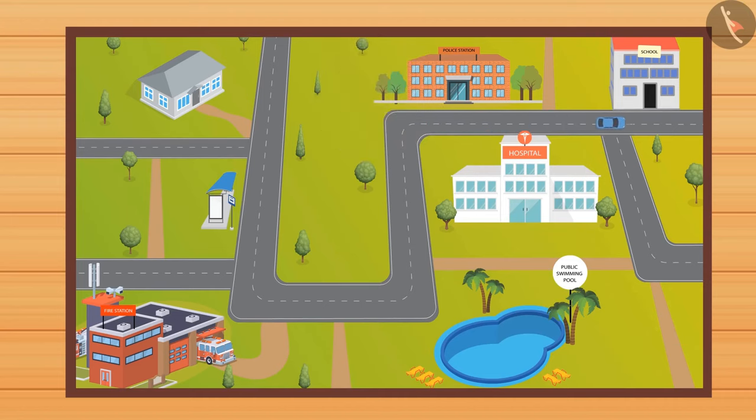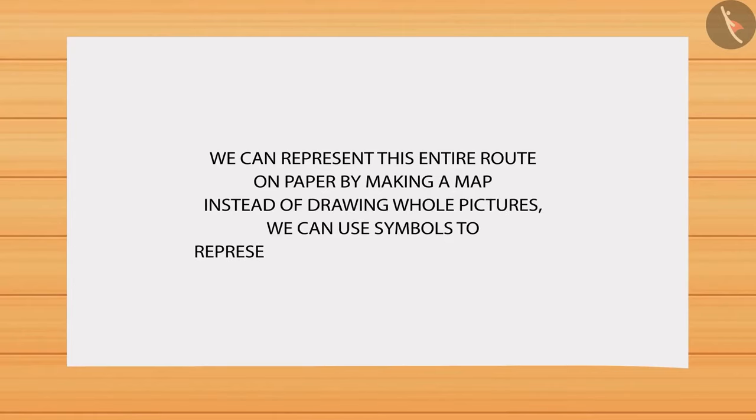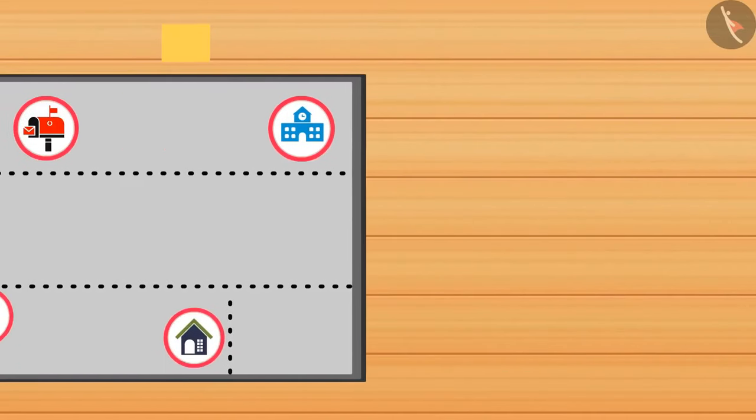We can represent this entire route on paper by making a map. Instead of drawing whole pictures, we can use symbols to represent different places on the map. For example, here is the map showing the route from Nasima's home to school. Now observe.